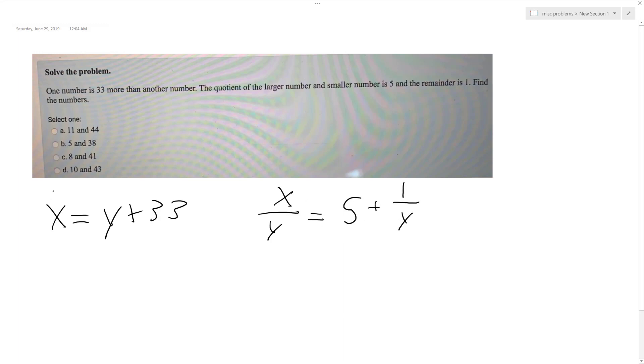So all we do here is we can basically substitute. So what we'll do is we can sub for every x value y plus 33, so I'll have the first equation y plus 33 over y is equal to 5y plus 1 over y.